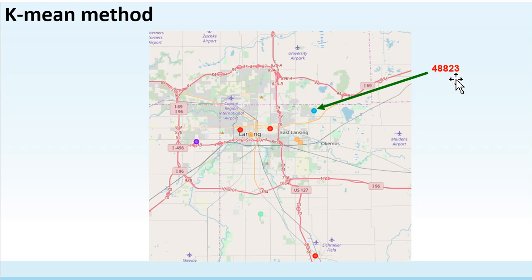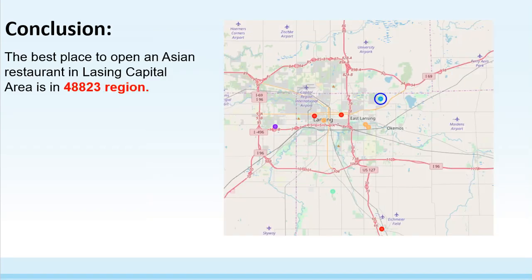In this cluster, people's favorite restaurant type is Asia restaurant. So in conclusion, the best place to open an Asia restaurant in the Lansing capital area is the 48823 region. Thank you very much for listening.